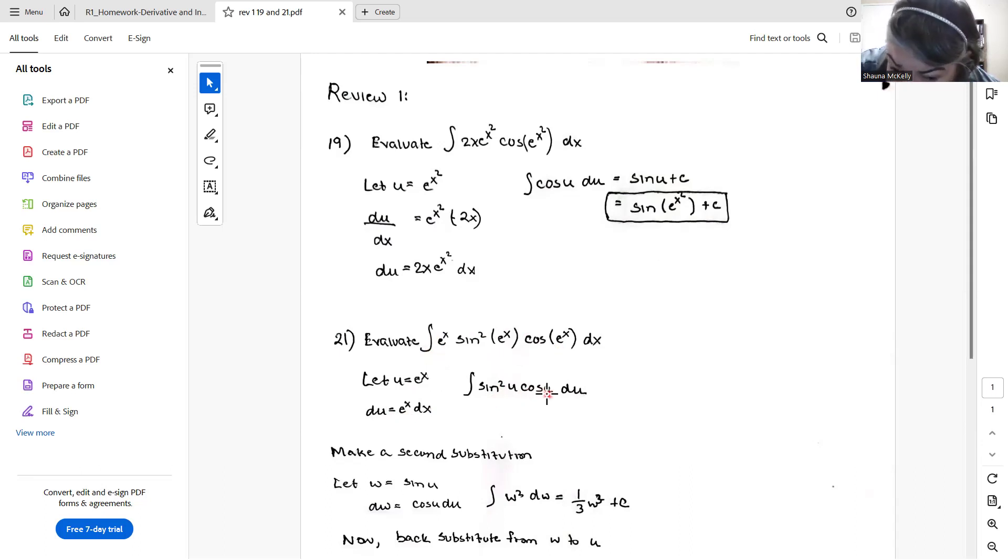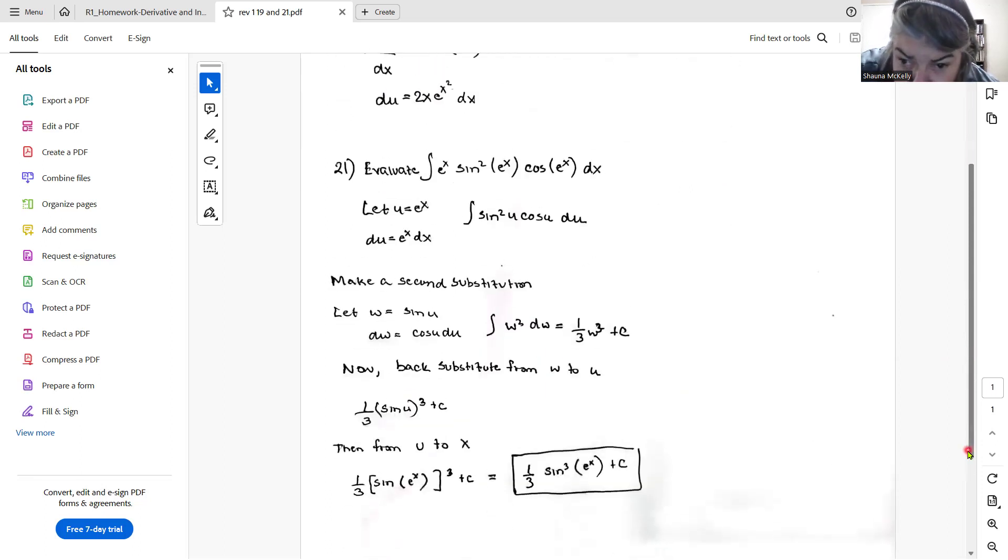I went with another strategy here. There's a couple of different strategies you could have used to solve this. What I did was I went with another substitution. I said, let w - you can use any other letter other than the ones that you've used. We've used x, x is the original, and we used u in the first substitution. So pick another letter. I used w. W is the sine of u. And dw then is cos(u) du.